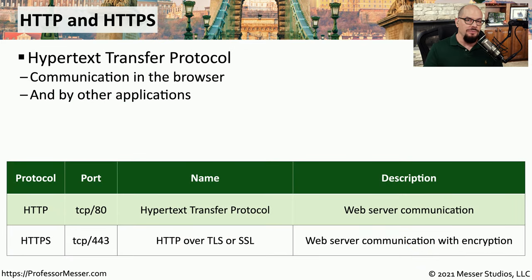If you're communicating to a web server, you're using the Hypertext Transfer Protocol. There are usually two different port numbers used: TCP port 80, used by HTTP which sends information over a non-encrypted channel, and TCP port 443, used by HTTPS or Hypertext Transfer Protocol Secure. This encrypted communication historically used SSL, or Secure Sockets Layer, although newer web servers use a newer version called TLS, or Transport Layer Security.